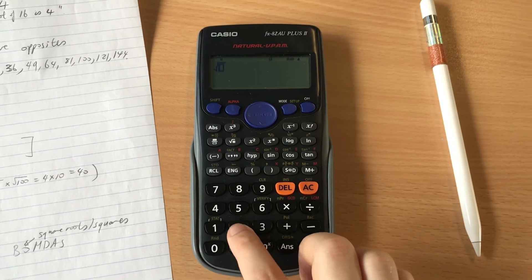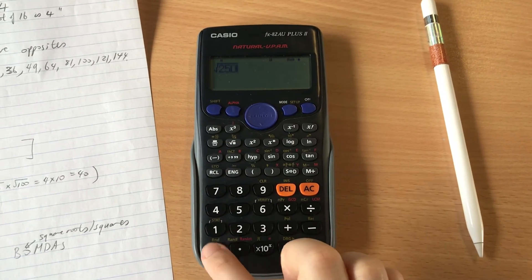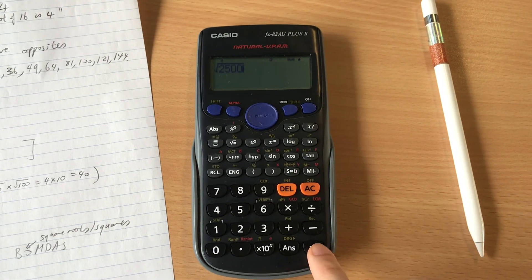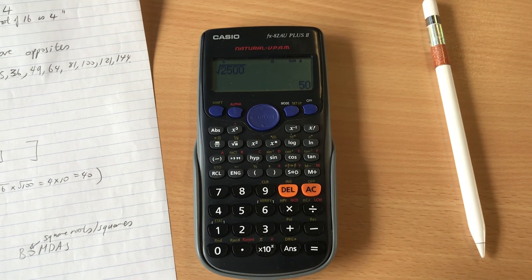And just one more check, part D, square root of 2,500 equals, does it equal 50? Yes it does. Good.